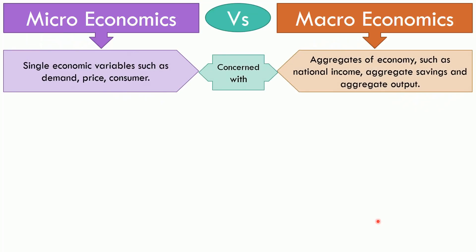Microeconomics is concerned with single economic variables such as demand, price, consumer, etc. On the other hand, macroeconomics is the study of aggregates, so here the subject matter is national income, aggregate savings, aggregate output, etc.